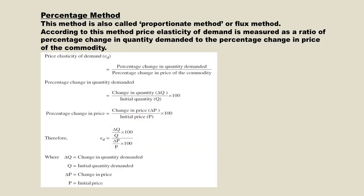According to the Percentage Method, price elasticity of demand is measured as a ratio of the percentage change in quantity demanded to the percentage change in price of the commodity. The formula is: ED = (percentage change in quantity demanded) ÷ (percentage change in price). Percentage change in quantity demanded = change in quantity demanded divided by initial quantity demanded, multiplied by 100. Percentage change in price = change in price divided by initial price, multiplied by 100. So ED is denoted as: ED = (ΔQ/Q × 100) ÷ (ΔP/P × 100).